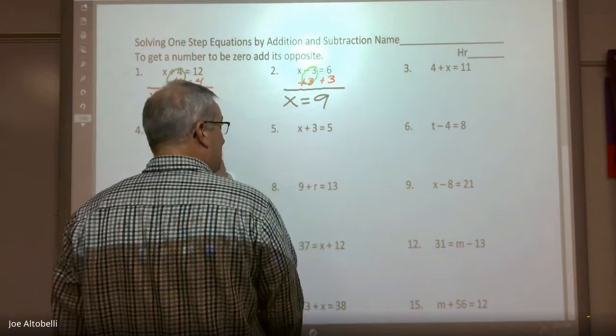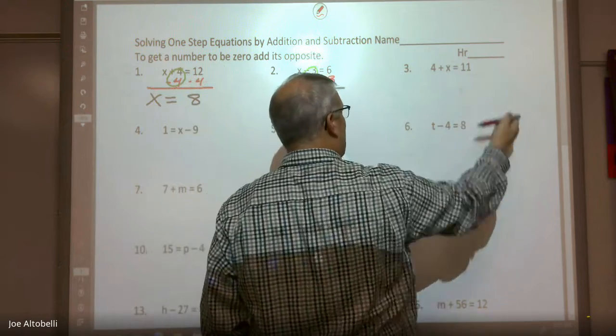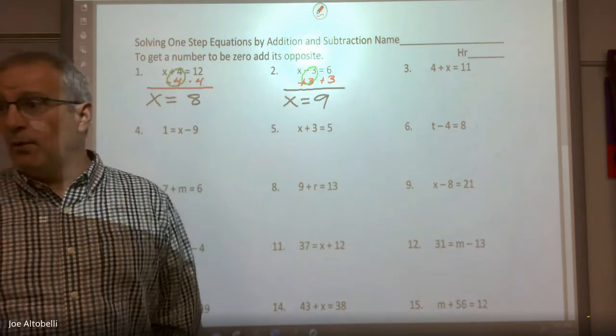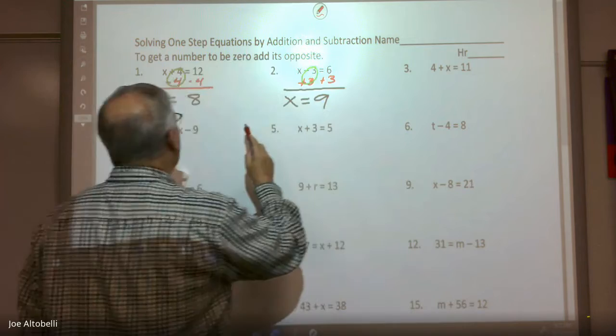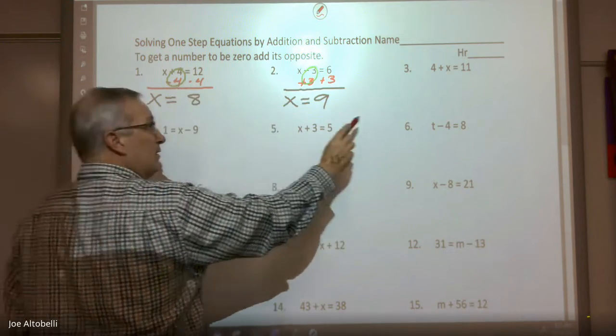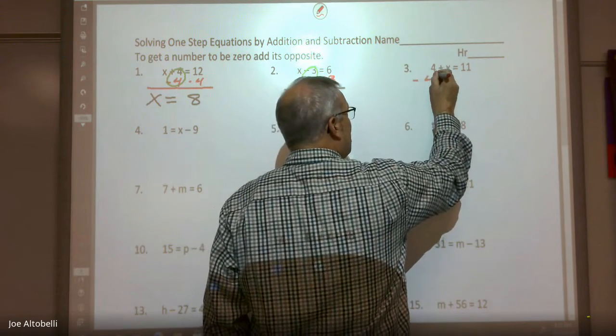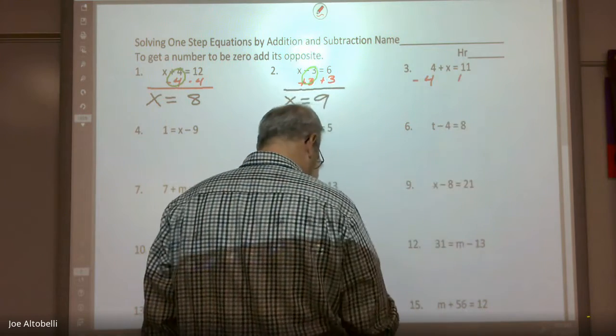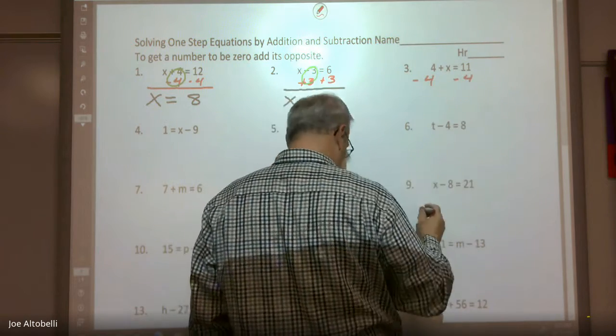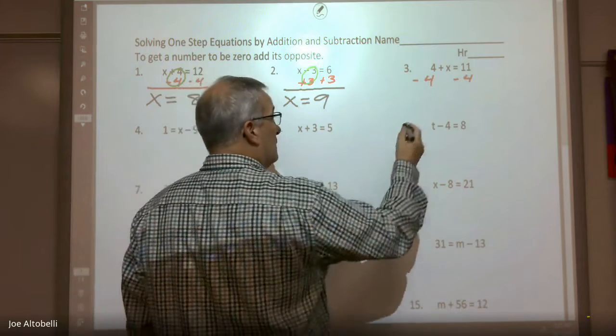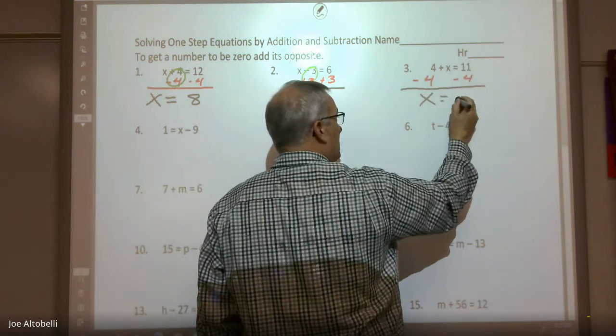Number three, what am I going to add on the left side? A negative 4. I'm going to add a negative 4. Now when I do this, I don't write the negative 4 under the x here. I write it under the 4. So I'm adding a negative 4 and adding a negative 4. This zeros out, leaving me with just x = 7.